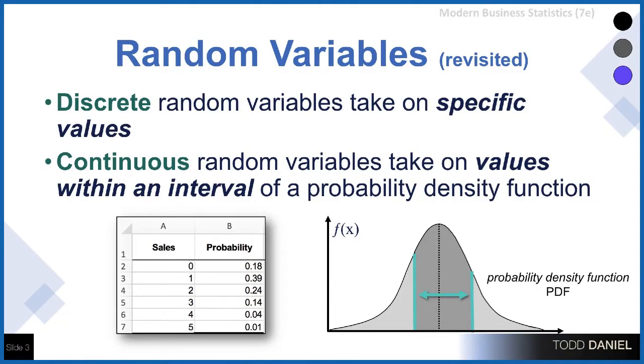Now you may recall from before spring break we talked about discrete probability distributions. The thing that distinguishes a continuous from a discrete probability distribution is whether or not the random variable can take on a single value. With a discrete probability distribution we can ask questions like what is the probability that you will sell three cars or that exactly five people will show up in this space of time. With a continuous probability distribution, a continuous random variable will take on values within an interval of a probability density function. For instance, what is the probability that a score will be between two values.